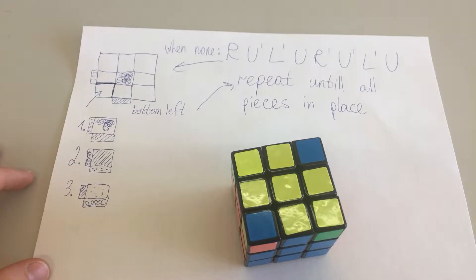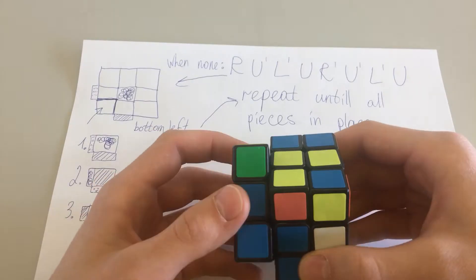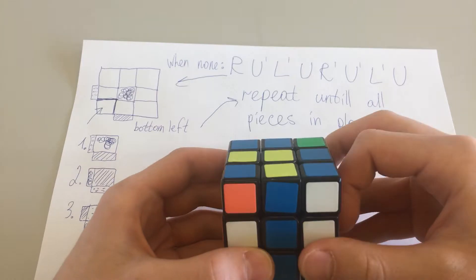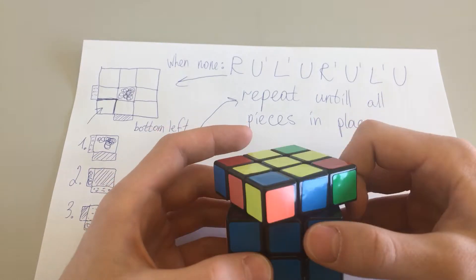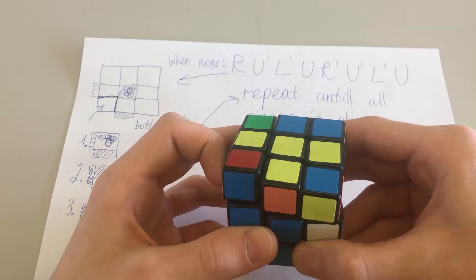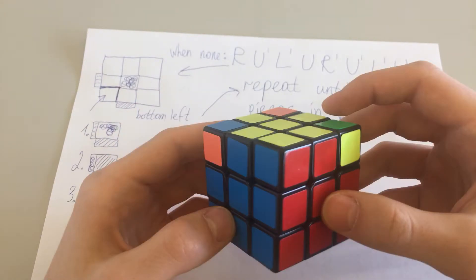Find the one in the correct position, doesn't matter if it's facing yellow or not, it just should be in the place. If there are none, do an algorithm shown in the video. Then hold the cube that way that corner piece is in bottom left. Repeat the algorithm until all pieces are in their spots.